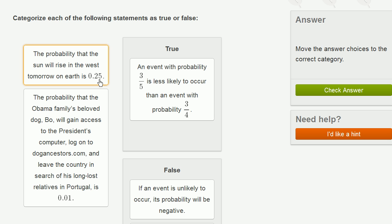That probability is very, very, very close to 0. It's not going to be 0.25. 0.25 is a fairly large probability. So if this was actually the case, then as we live our lives, we would be seeing days where the sun rises in the west. And we clearly don't see that. So this is false.